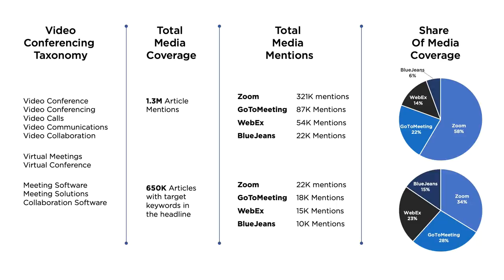This is not saying that Zoom gets 58% of all coverage related to video conferencing. It says that Zoom gets 58% of the coverage when measured against its competitors within the context of video conferencing. There's a big difference in how you talk about that and how you present it on slides. If you apply the methodology I discussed last week — unique mentions and exclusives — it paints a more accurate representation of your unique coverage against competitors. To me, it's another data point that defines relevancy.